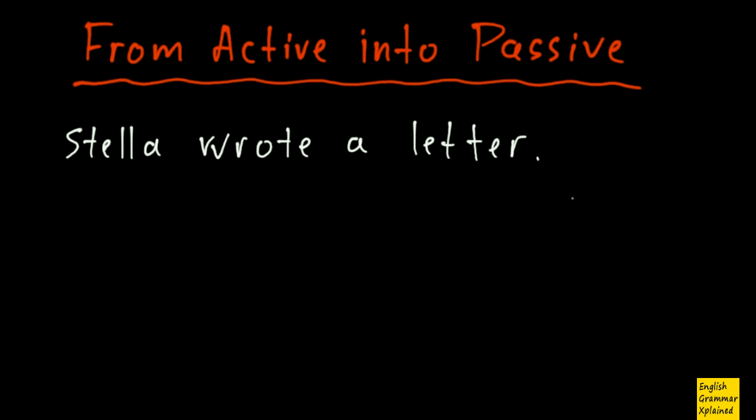If I have a simple sentence, just like this: Stella wrote a letter. So here I have active, this is active, active voice, and this is my subject, this is my main verb, and this is my object.